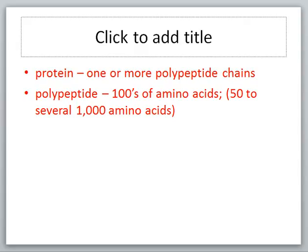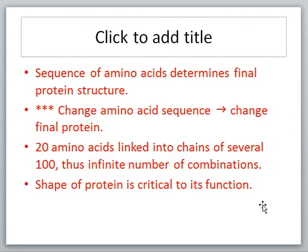Now then, a protein consists of one or more polypeptide chains. And a polypeptide can consist of hundreds of amino acids. It can be anywhere from as few as 50 to several thousand amino acids in length. But, the polypeptide is a chain of amino acids. It's not necessarily a protein. Protein has a specific three-dimensional shape to it. It's a polypeptide chain that is folded and bent into a specific three-dimensional shape. So, sequence of amino acids determines the final protein structure. And, notice with three asterisks on it, any change in the amino acid sequence means that we have a change in the final protein.